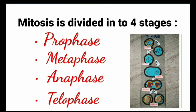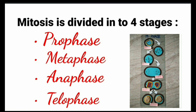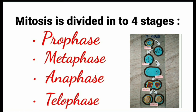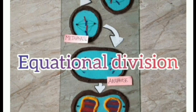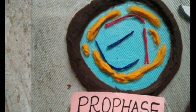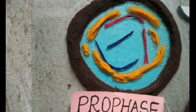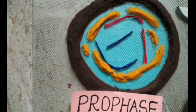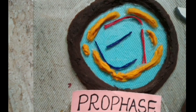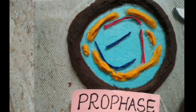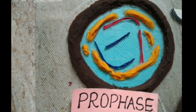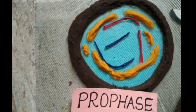Mitotic phase is divided into four phases: Prophase, Metaphase, Anaphase, and Telophase. Prophase is the first stage of karyokinesis of mitosis and this is marked by initiation of condensation of chromosomal material. Chromosomal material becomes untangled during the process of condensation.